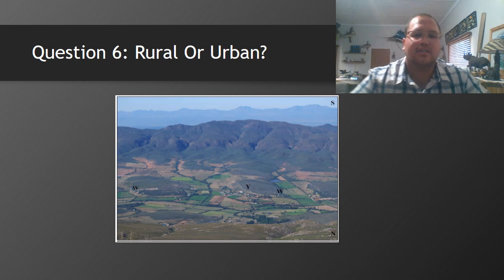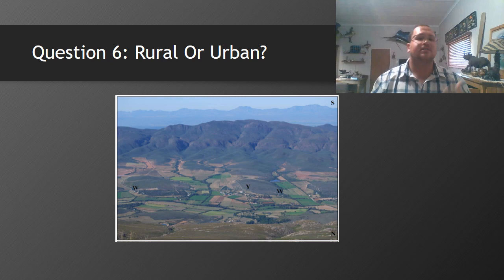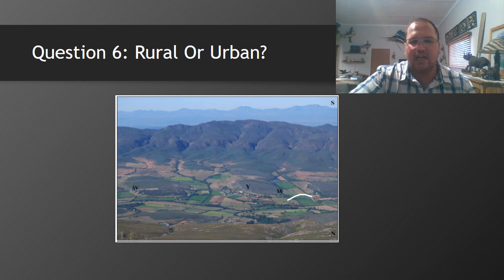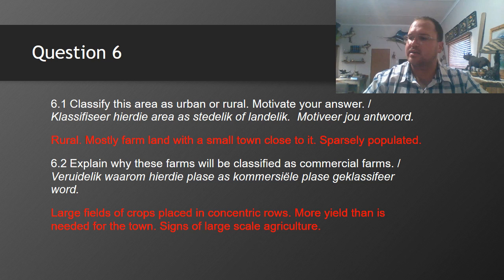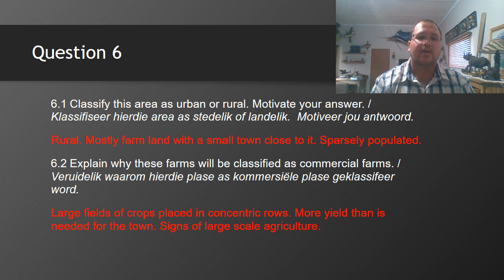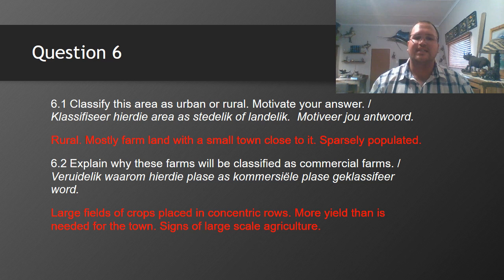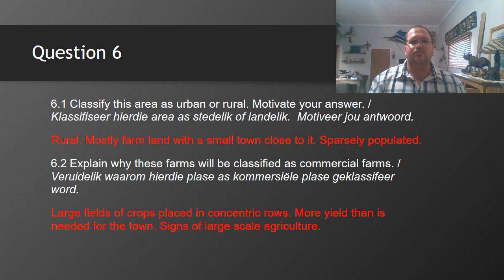Looking at the image: would this classify as rural or urban? It classifies as rural — there are big pieces of land and the houses are few and far between, not densely packed. 6.1: This area is rural — mostly farmland with a small town, sparsely populated. 6.2: These farms are classified as commercial farms because of large fields of crops placed in concentric rows, producing more yield than the town itself needs — signs of large-scale agriculture.